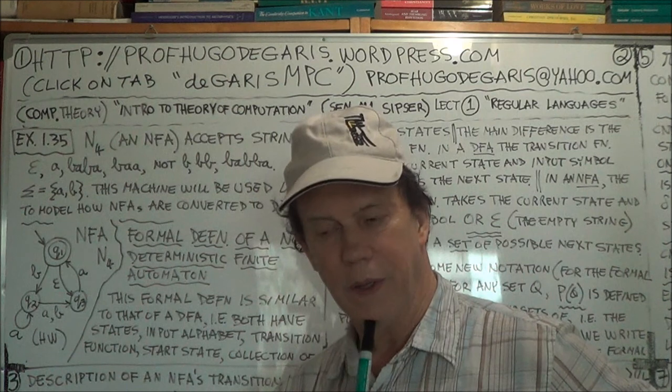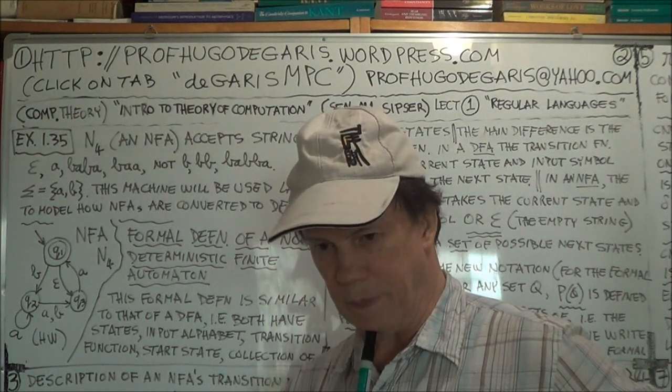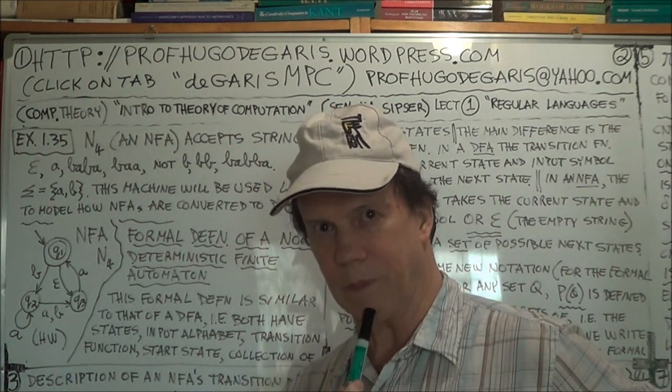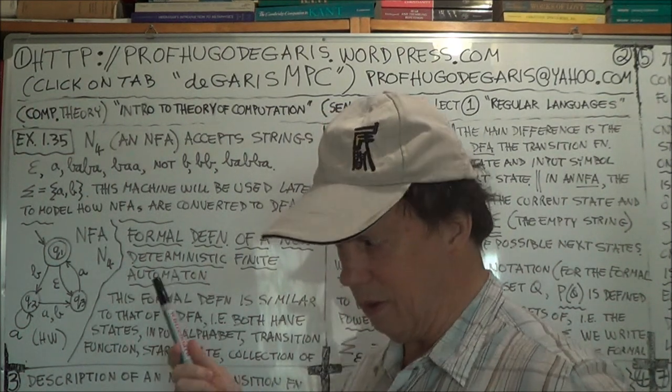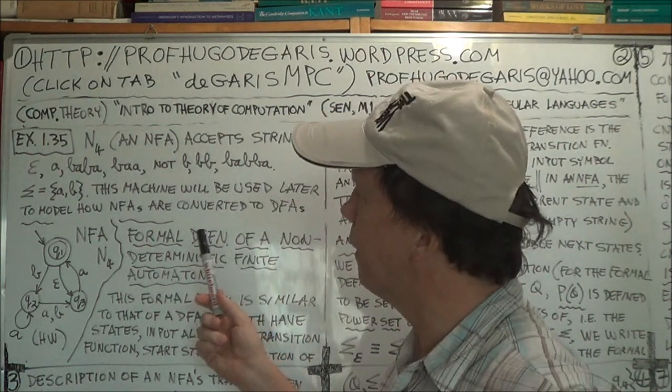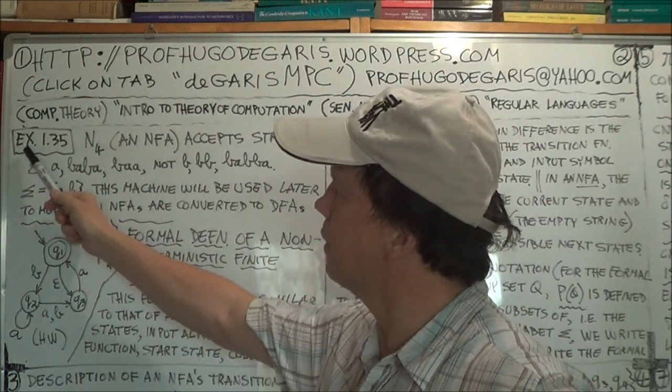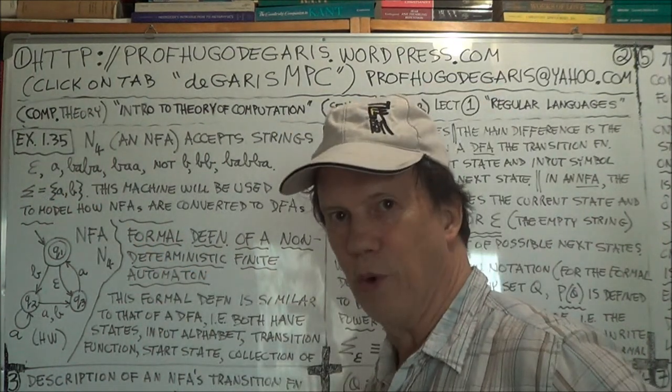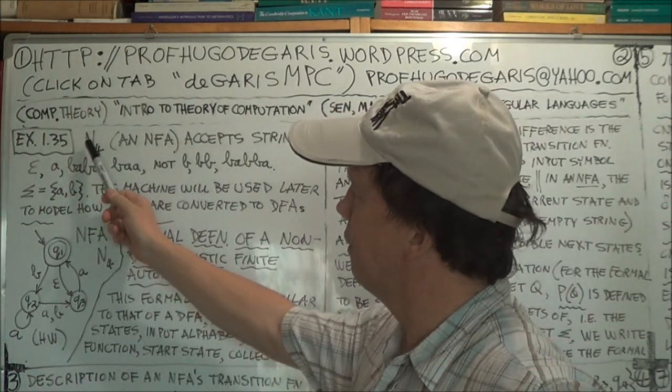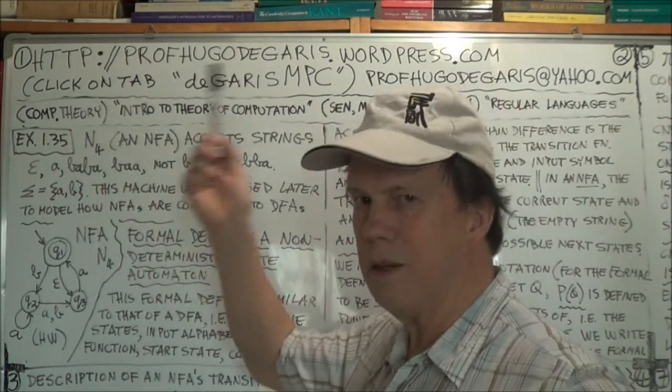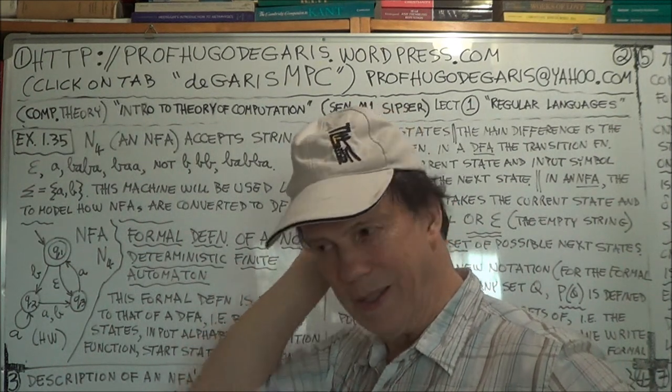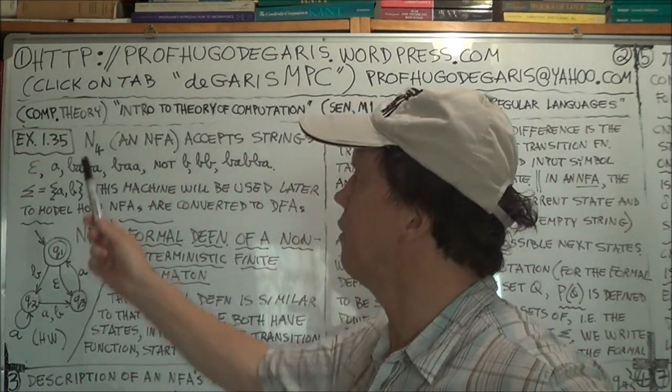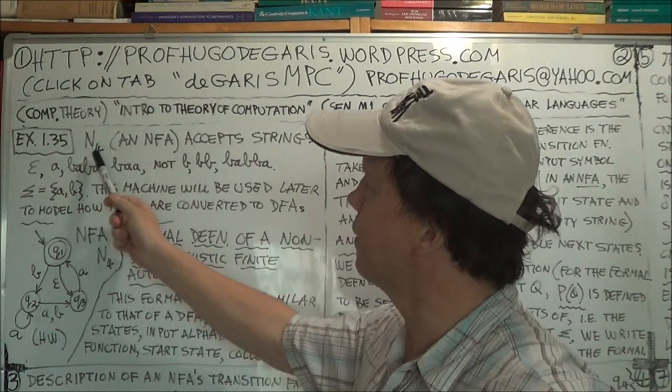Non-deterministic finite automata. In this session I'll give you another example, example 1.35, and it's fourth. We're using the capital letter N to stand for machines, automata, finite automata that are non-deterministic. N for non-deterministic, and it's our fourth example.